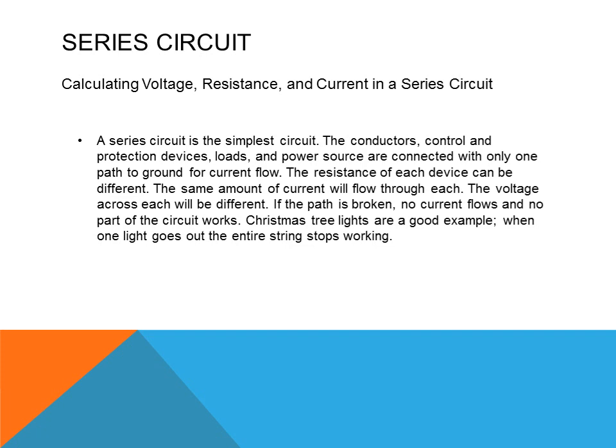The resistance of each device can be different, but the same amount of current will flow through each of them no matter what the resistance in the circuit is. The voltage across each will be different — it would be based on its resistance. So the resistance of each load determines what the voltage drop of that load will be. If the path is broken, no current flows, and no part of the circuit works. Going back to the Christmas tree example — take a light bulb out, all the lights go out.